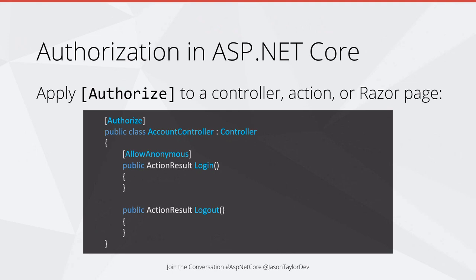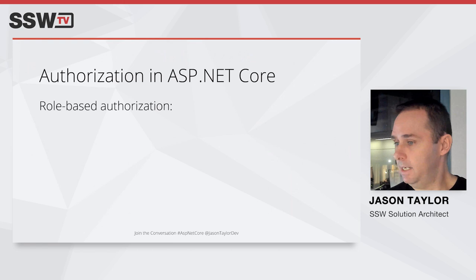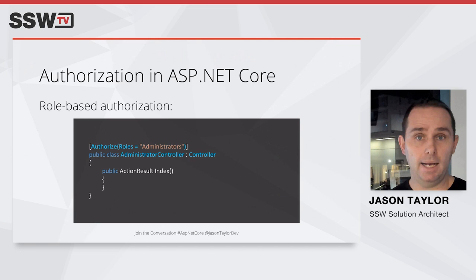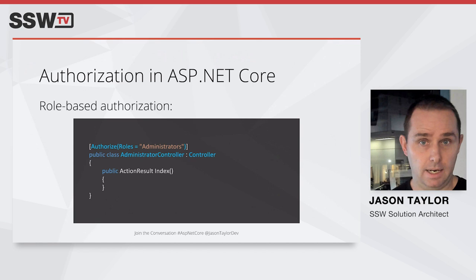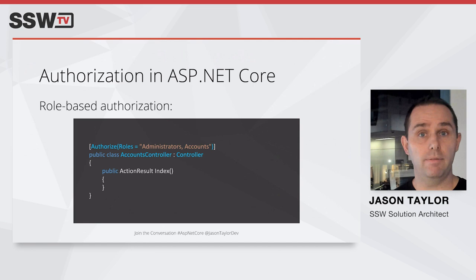ASP.NET Core also supports role-based authorization using the Authorize attribute. In this example, the Authorize attribute has been applied to the administrator controller, restricting access to users who are authenticated and who belong to the Administrators role. We can also add multiple roles — for example, Accounts and Administrators — meaning the user needs to be a member of either role, not both.